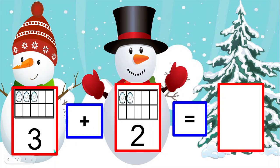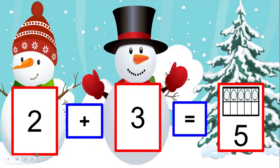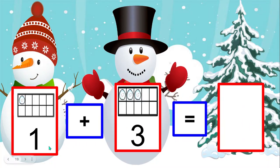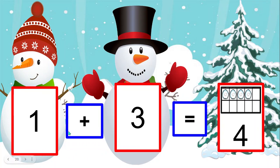Three snowballs plus two snowballs equals how many snowballs? Two plus three equals five snowballs. One snowball plus three snowballs equals how many snowballs? One plus three equals four snowballs.